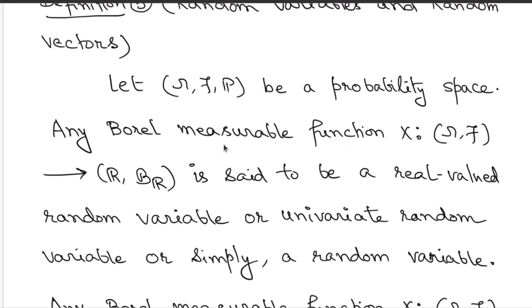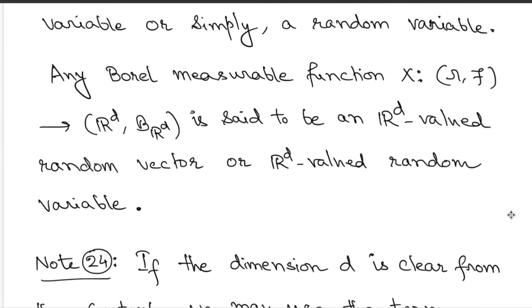Any such Borel measurable function defined on a probability space will be called a real valued random variable. So you have a probability measure in addition to the usual measurable structure, and as long as that probability measure is present you refer to these functions as real valued random variables — in short, univariate random variables, or simply random variables. These are all equivalent terms as long as you are interested in real valued measurable functions on top of probability spaces.